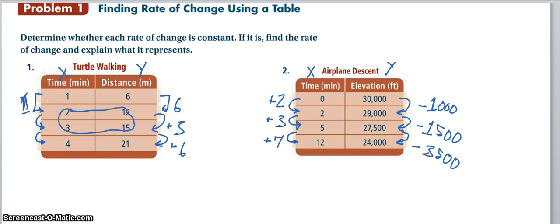So this problem if you caught on is a little bit more difficult because the time variable does not stay the same in how much it changes. So it goes up by two, then it goes up by three, then it goes up by seven. So this is not as easy to look at. So then when we compare our elevation change, we change by 1,000, we change by 1,500, and we change by 3,500, all descending.